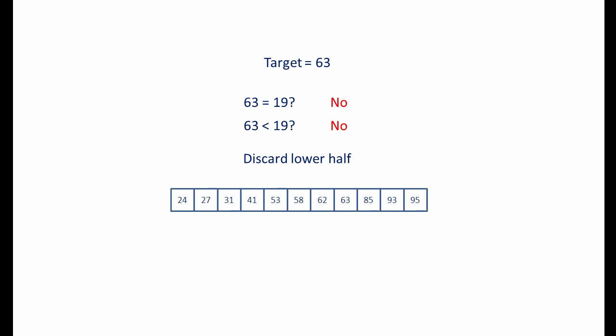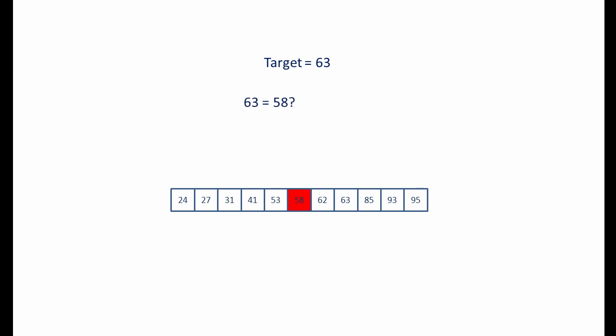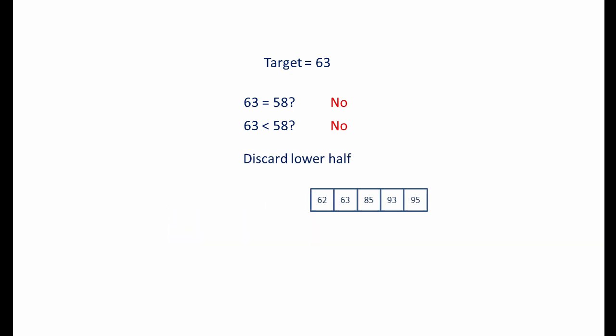And then we do it again. We identify the middle value and ask the question: is the target equal to this? If the answer is no, we ask the question: is the target less than this value? If the answer is no, we discard the lower half.